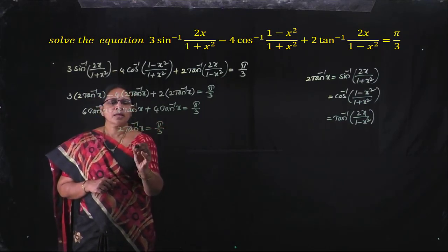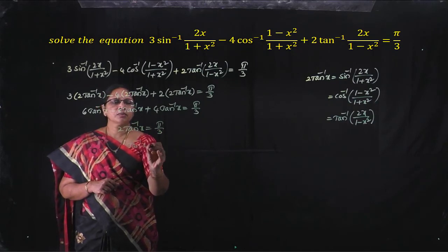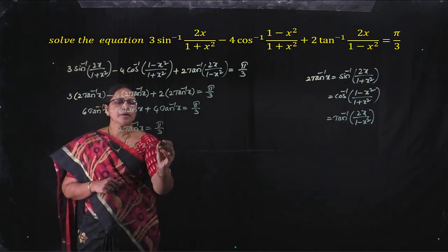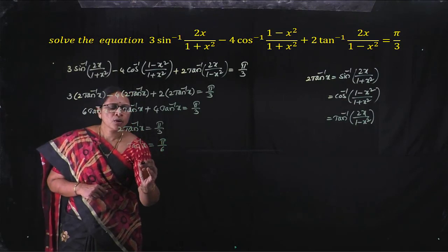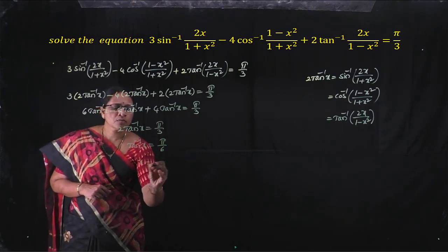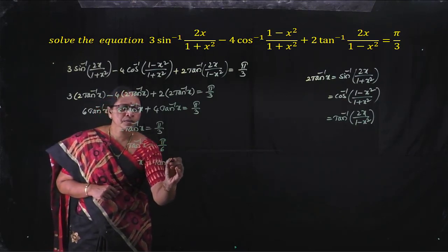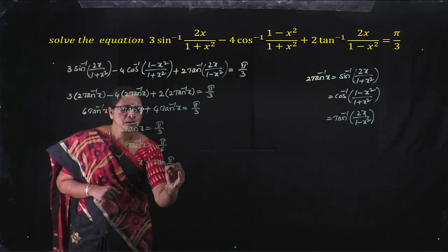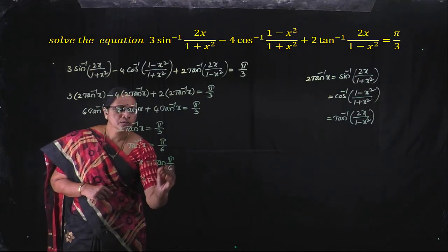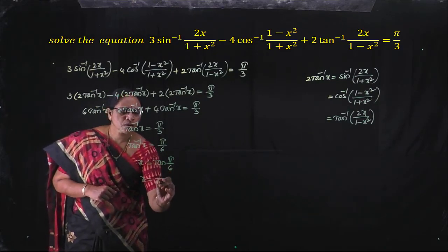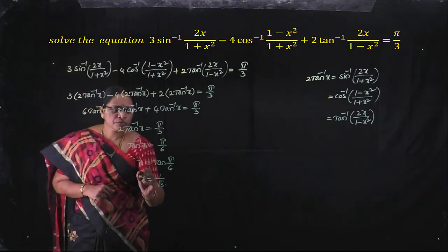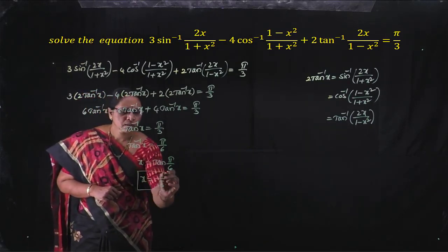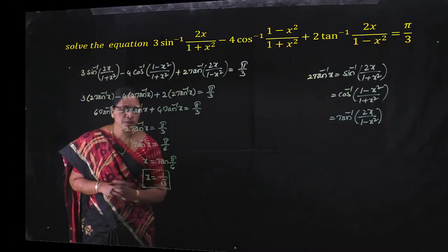Tan inverse x equals π by 6, so x equals tan of π by 6, which is 1 by root 3. Therefore the value of x is 1 by root 3.